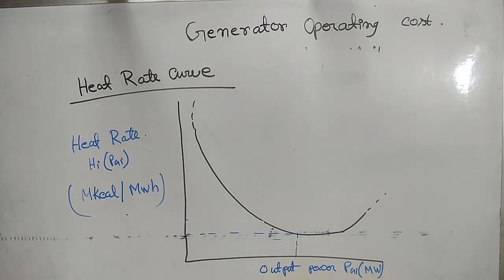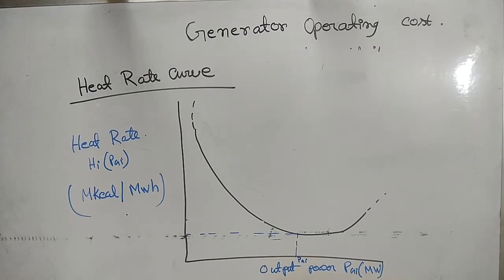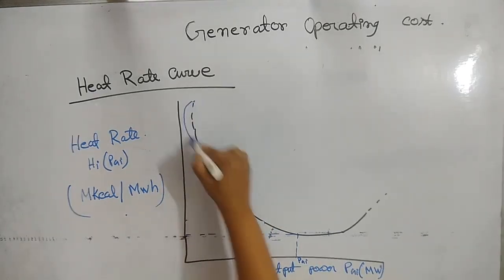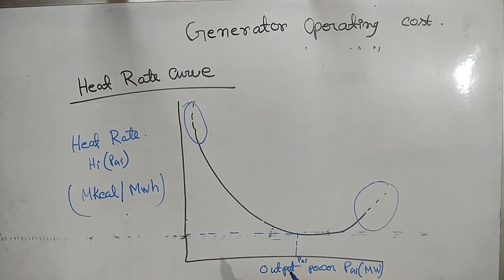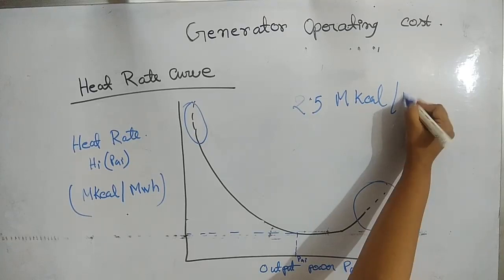The generating unit efficiency can be defined as the ratio of electrical energy output generated to the fuel energy input. So the generating unit is most efficient at minimum heat rate, which corresponds to a particular PGI. The heat rate or efficiency varies with the output power, and the curve indicates that it increases — meaning drop in efficiency — at high and low power limits. Typically, the peak efficiency heat rate of a modern fuel power plant is around 2.5 M kilocalorie per megawatt hour.